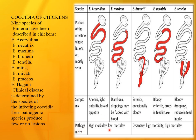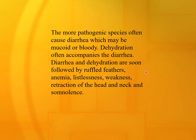Pathogenicity: the most important pathogenic species are brunetti, acervulina, and tenella — they produce blood in the feces. Necatrix also produces blood and is very severe and often fatal. The more pathogenic species cause diarrhea, which may be mucoid or bloody. Dehydration often accompanies diarrhea, followed by ruffled feathers, anemia, listlessness, weakness, retraction of the head and neck, and drowsiness.